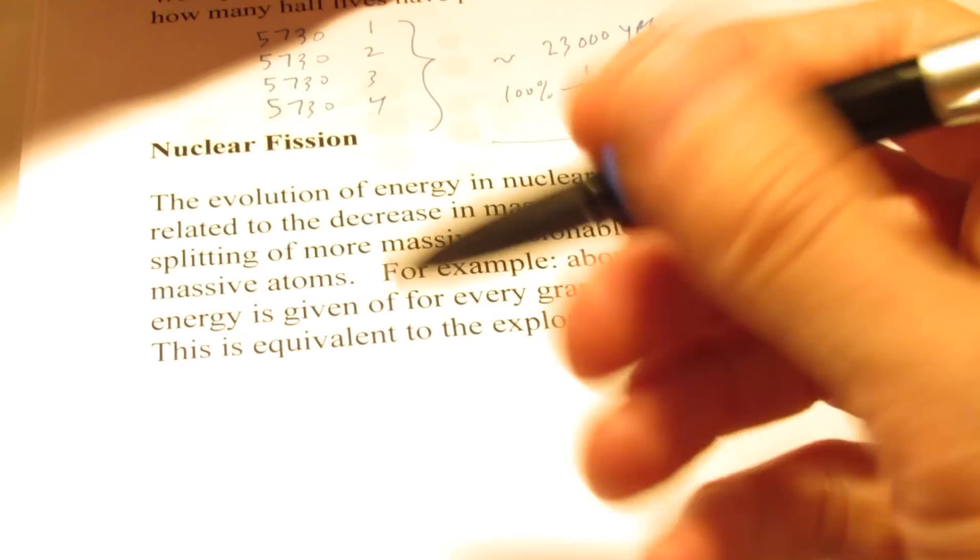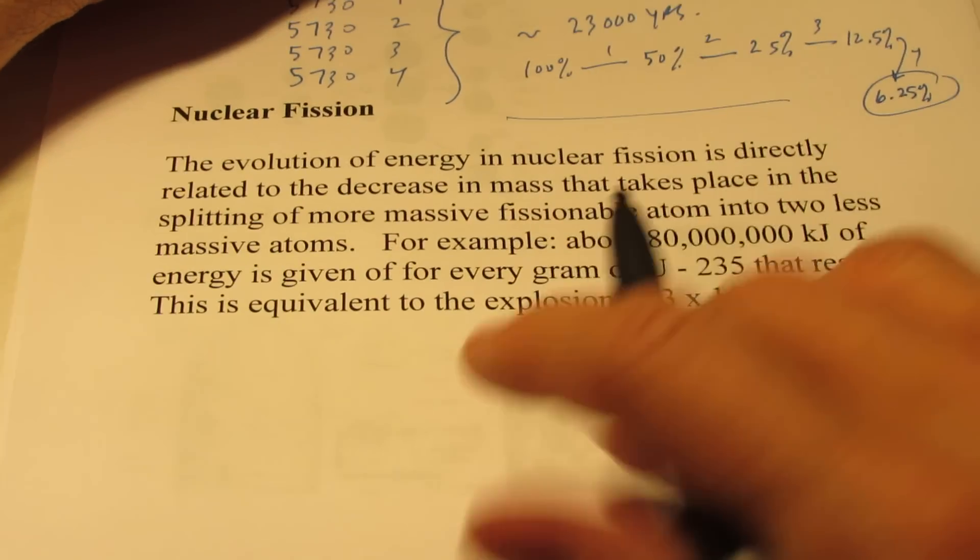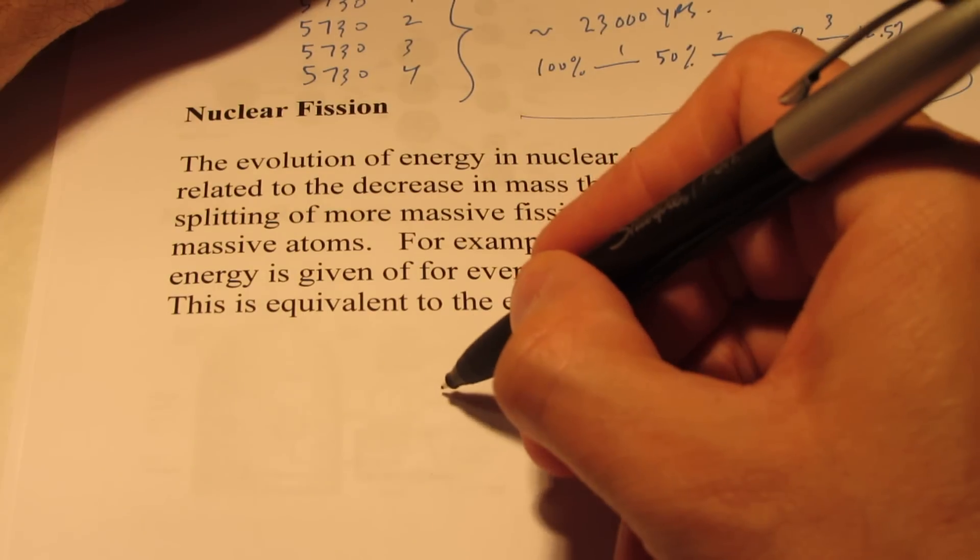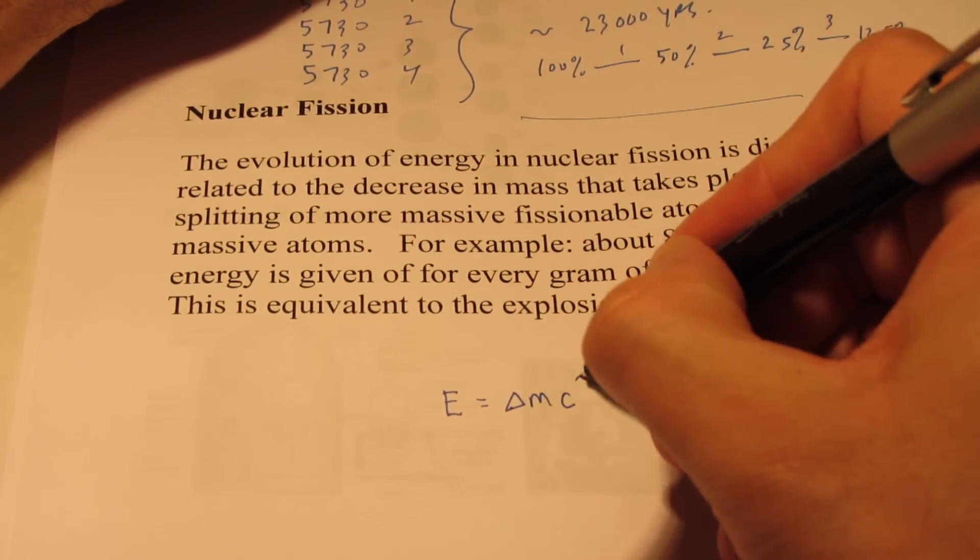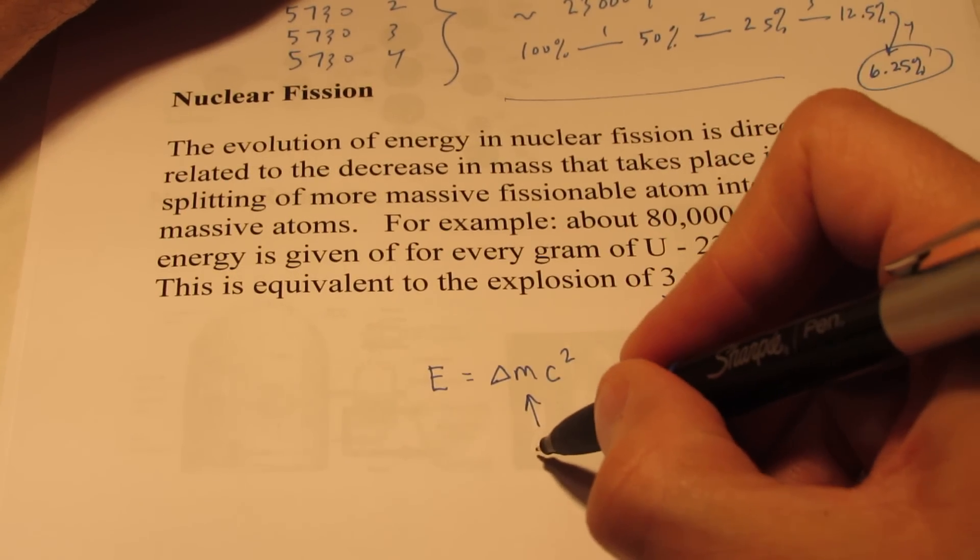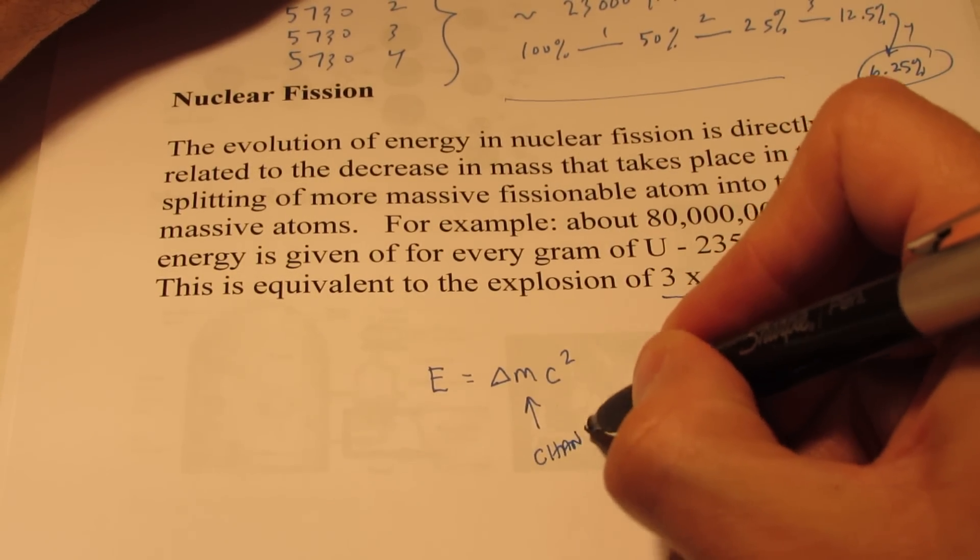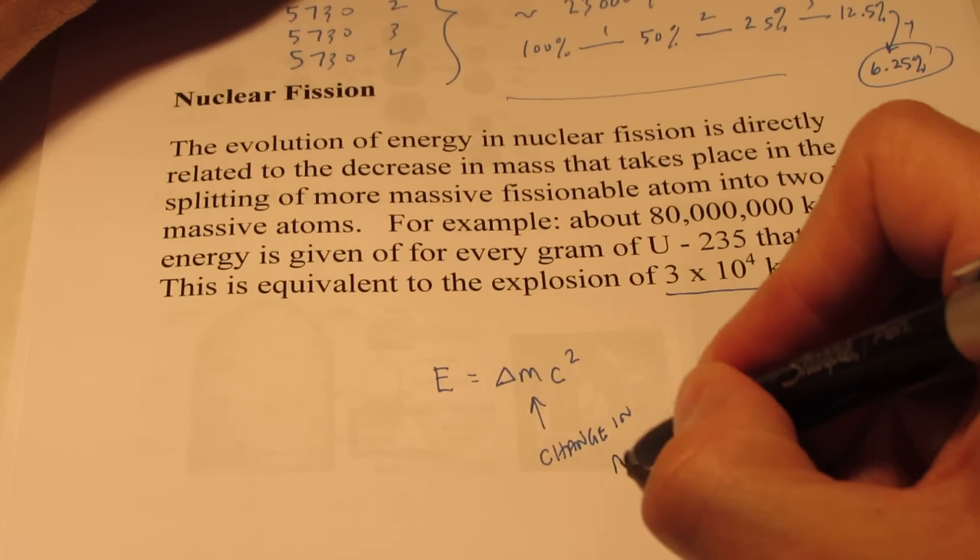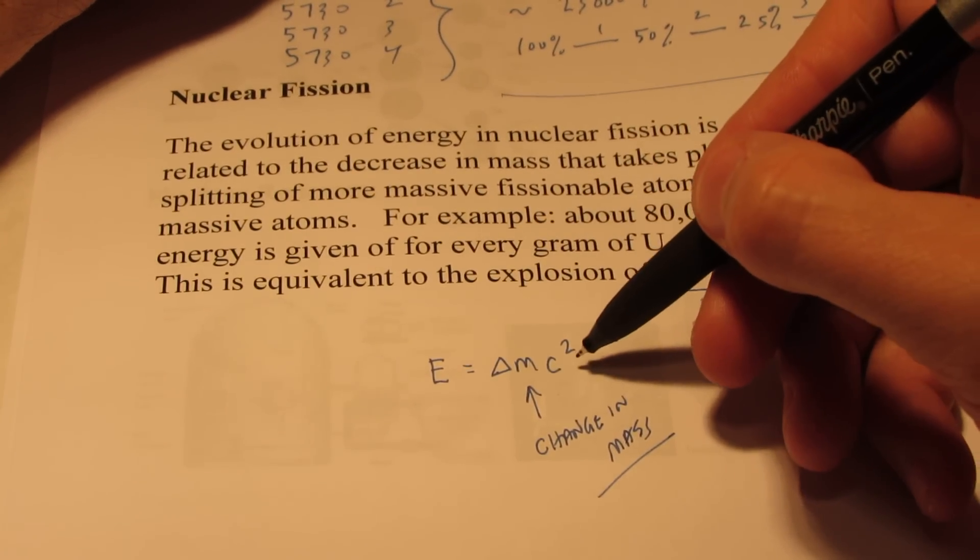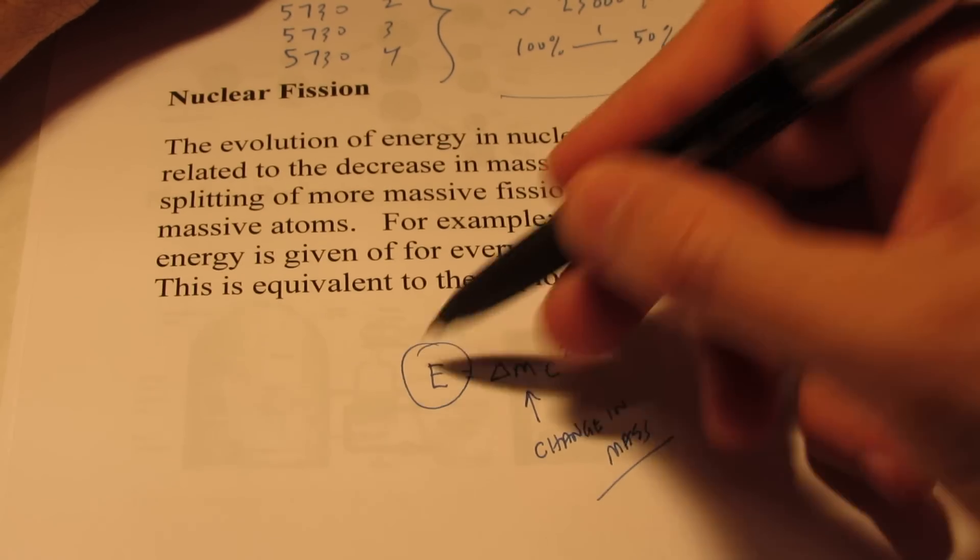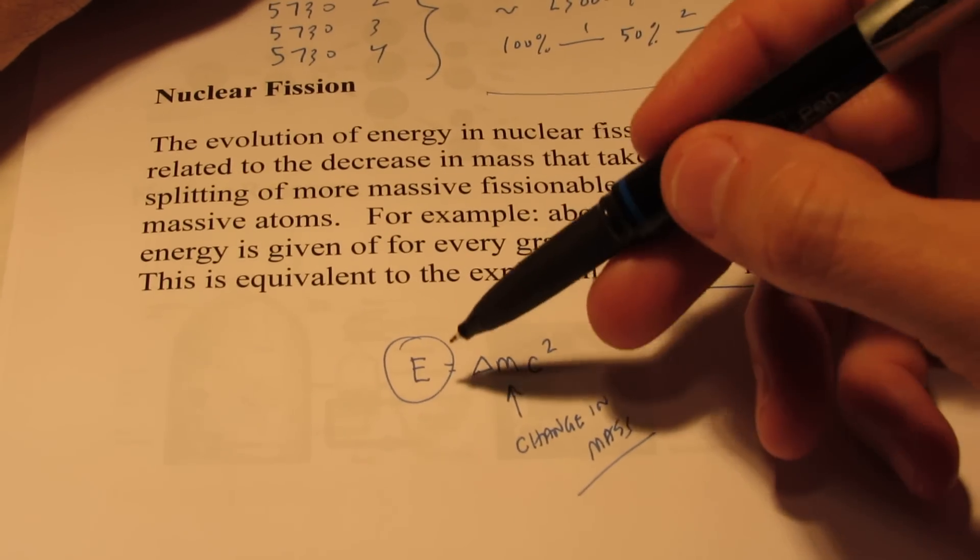And you guys may be aware of this equation made famous by Einstein: E equals delta M C squared. That delta M is the change in mass. So a very small change in mass, when multiplied by the velocity of light squared, ends up in quite a large yield of energy.